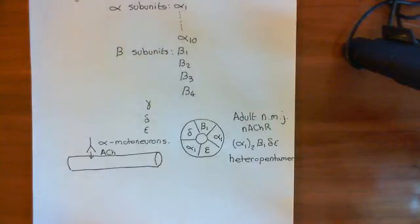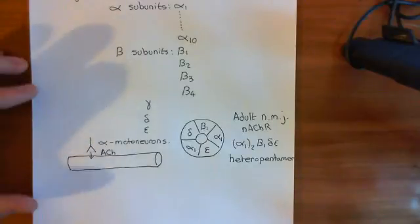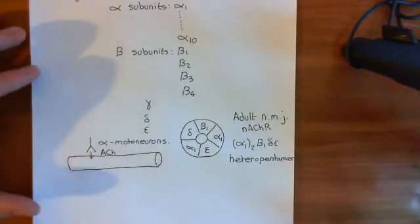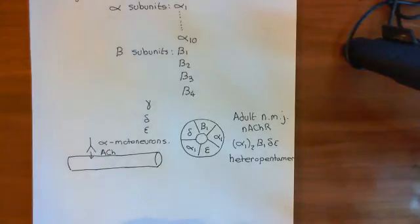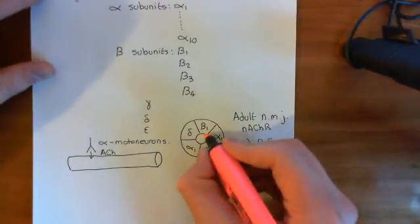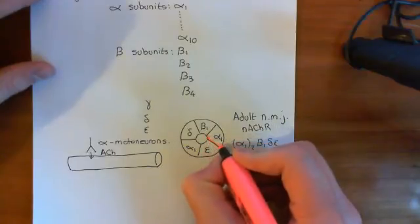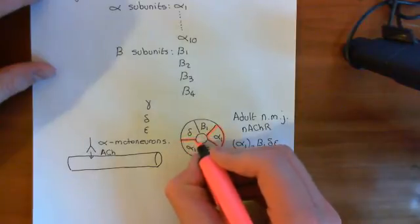Welcome back to this next video. In the previous video, we saw that there were 17 different protein subunits which you could build nicotinic acetylcholine receptors out of. We've said that there could be an incredible different number of nicotinic acetylcholine receptors which you could build out of these 17 different receptor subunits. However, we're going to study some specific ones — the most important ones — and the one we began with was the adult neuromuscular junction nicotinic acetylcholine receptor.